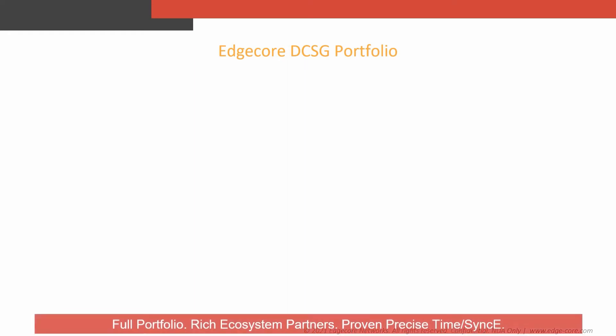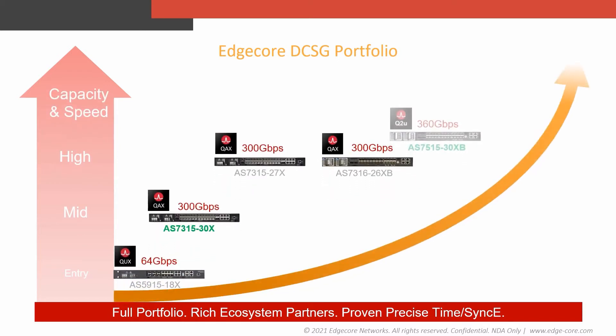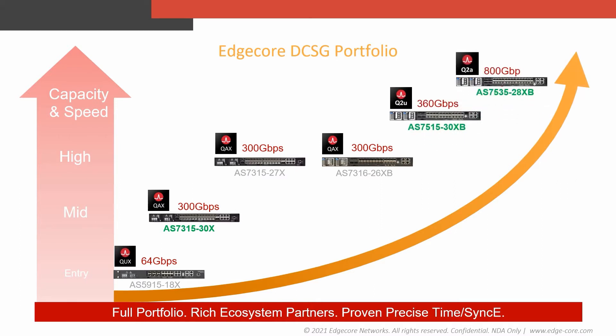The demand for network data is growing. It's especially true during the pandemic, as remote work and new applications that enable people to work closely have become the norm. EdgeCode Networks provides a full range of DCSG solutions to meet the demand of network data growth for communication service providers, from high-capacity to entry-level DCSG that can run on different commercial or open-source operating systems. That offers the freedom of choice to the operator to choose the best-of-breed products so that operators can remove single-vendor lock-in from incumbent vendors to lower investment and costs.